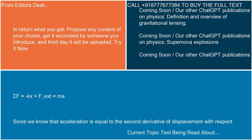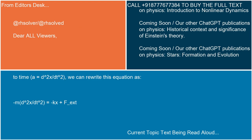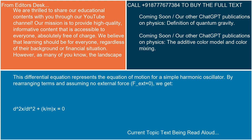Since we know that acceleration is equal to the second derivative of displacement with respect to time — a equals d²x/dt² — we can rewrite this equation as m·d²x/dt² equals kx plus F(t). This differential equation represents the equation of motion for the system.